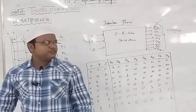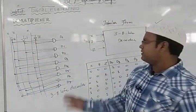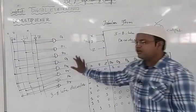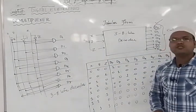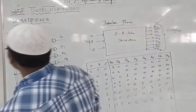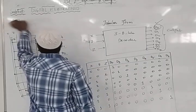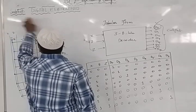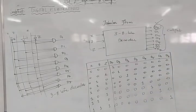In the exam, there are no numerical problems for the decoder — just design questions. The process is: block diagram, truth table, then gate-level design. We have finished the 3-to-8 line decoder. Next we will see how the encoder works, including its truth table and logic diagram.